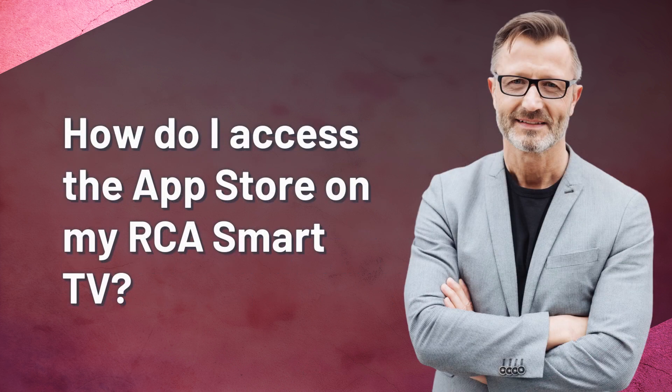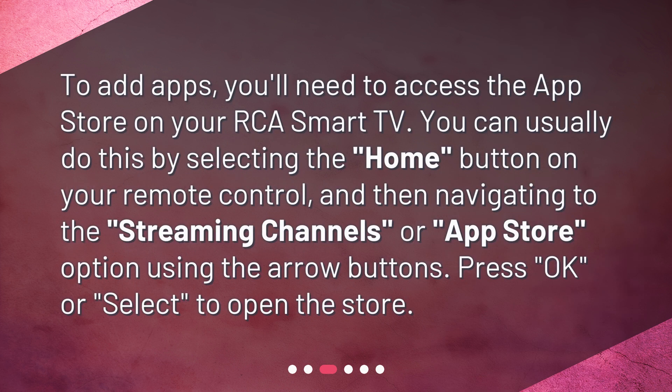How do I access the App Store on my RCA Smart TV? To add apps, you'll need to access the App Store on your RCA Smart TV. You can usually do this by selecting the Home button on your remote control and then navigating to the Streaming Channels or App Store option using the arrow buttons. Press OK or Select to open the store.